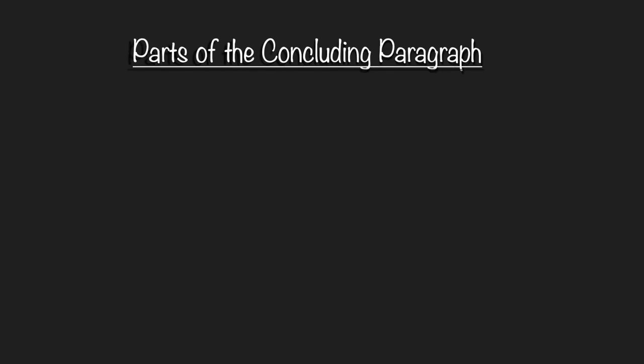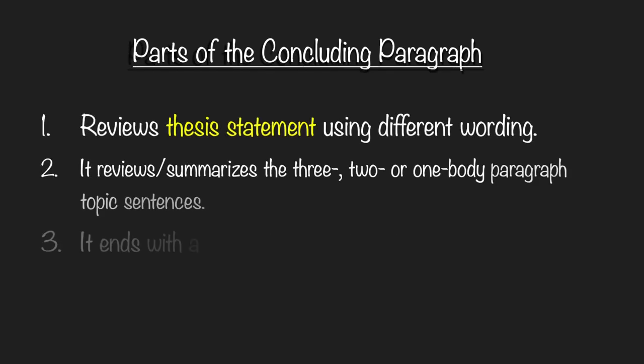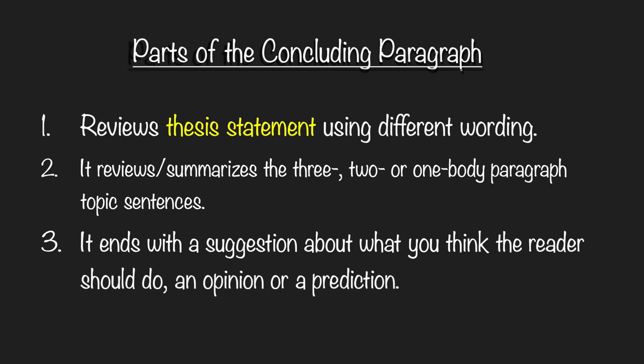Parts of a concluding paragraph. The first part: it reviews the thesis statement using different wording, so it paraphrases it. Number two: it reviews and summarizes the three, two, or one body paragraph topic sentences. And number three: it ends with a suggestion about what you think the reader should do, or you can give an opinion or a prediction.